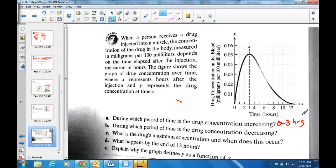During which period of time is the drug decreasing? Three to 12, right? Or you can even argue 13 here. When is the drug's maximum concentration? At three hours, but what is the drug's maximum? Right here, right? 0.05. And when does it occur? Three hours.